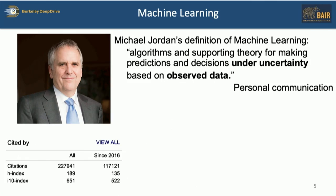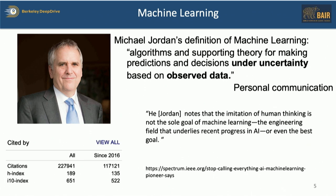Michael Jordan has worked on a book on machine learning forever — it's kind of an inside joke, it's never been finished. So I just emailed him and said, what's your definition of machine learning? And he said: algorithms and supporting theory for making predictions and decisions under uncertainty based on observed data. As an engineer, that feels a lot better. He's probably the leading expert on machine learning and one of the most cited computer scientists. He actually doesn't like the term AI at all — he says the notion of imitation of human thinking is not the sole goal of machine learning, and this is an engineering field that underlies the recent progress in AI.